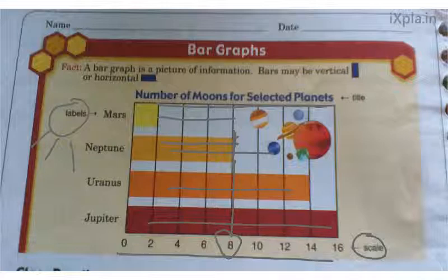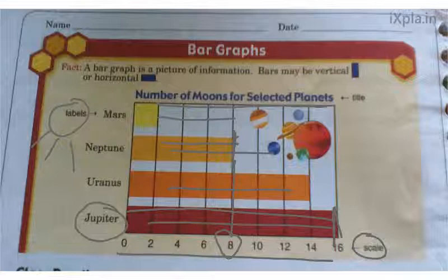Question 1d asks which planet in the graph has the most moons. At the bottom of the graph we see our longest bar has the most moons. The question is just asking which planet has the most moons — the answer is Jupiter. Jupiter has the most moons.